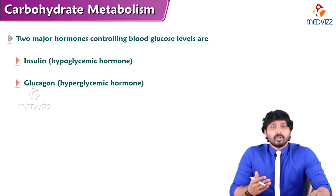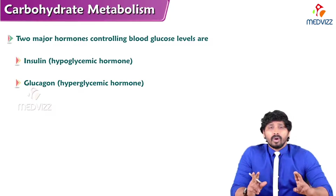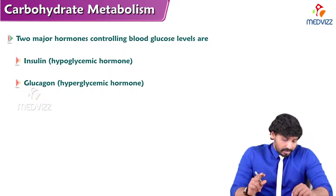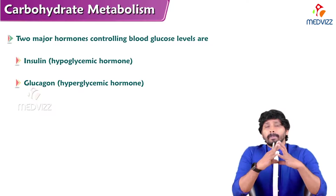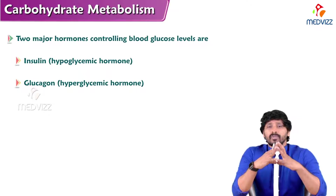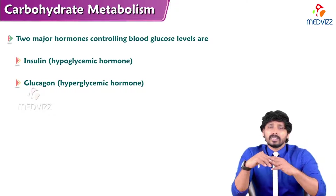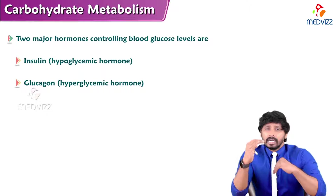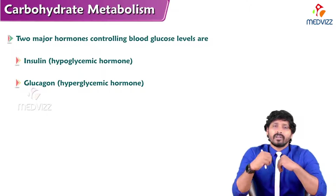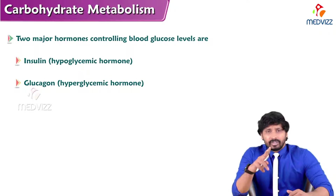First we will discuss hormone regulation of blood glucose homeostasis. Two hormones are mainly involved: insulin and glucagon. Both are peptide hormones secreted from the pancreas. When there are high blood glucose levels, insulin is secreted. When blood glucose is low, glucagon comes into action to raise blood glucose levels. Both these hormones are antagonist in action.